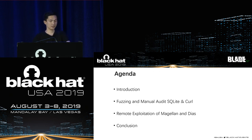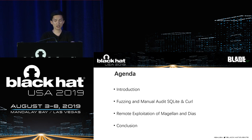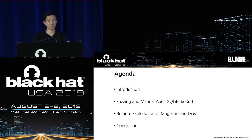Let's briefly look at the agenda. In the first part, we will introduce our main research results on SQLite and curl. In the second part, we will share details on how to discover SQLite and curl vulnerabilities through manual audit and fuzzing. In the third part, we will share how to exploit these vulnerabilities for remote attacks. Finally, we will summarize our research.